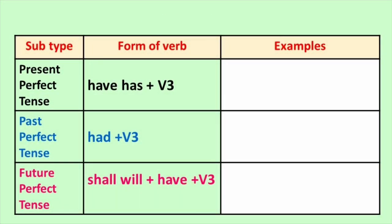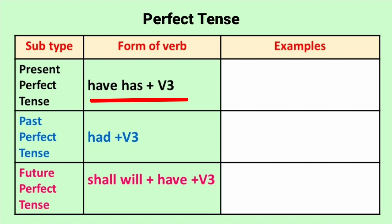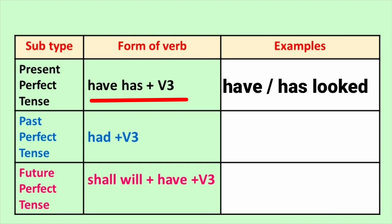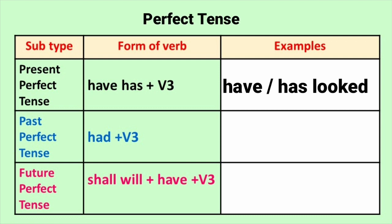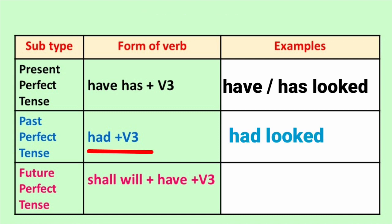Present Perfect Tense मधे Have किंवा Has plus V3 म्हणजेच Past Participle रूप घेतात. For example: Have / Has + Looked. Past Perfect Tense मधे Had plus V3. For example: Had + Looked.